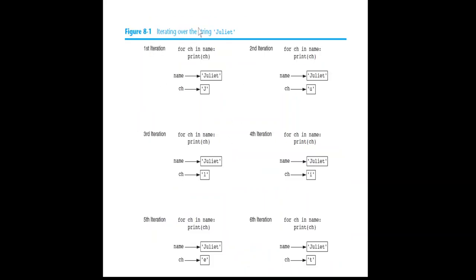Look at this iteration example. When we iterate over a string variable called name, in the first iteration we take the first character, for example 'J'. The second iteration takes the next character, then the next and next. This is very similar to a list — first item in the first iteration, second item in the second iteration, and so on until the last character.